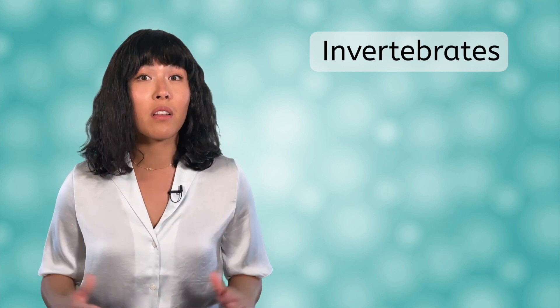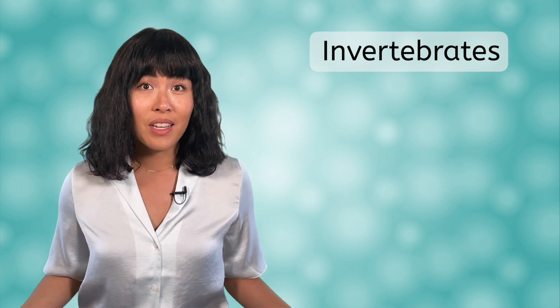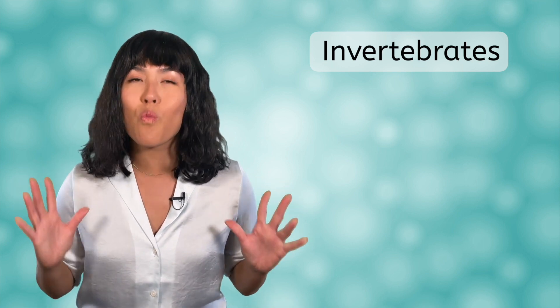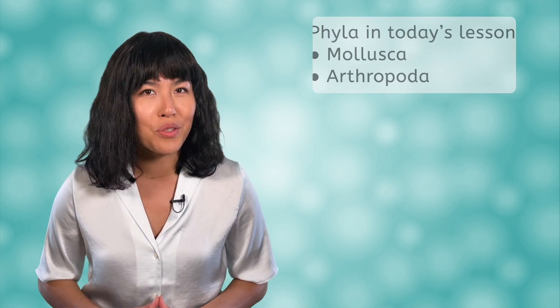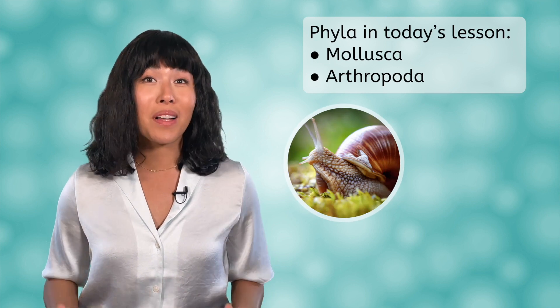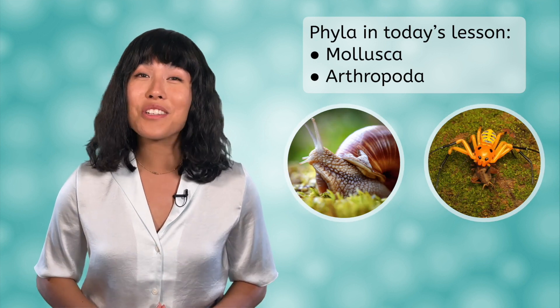If so, then you have eaten organisms found in our final two phyla of invertebrates: mollusks and arthropods. In fact, these animals make up a large food source for humans. You can find them on menus all around the world in countless preparations. Today's lesson will focus on these two phyla of invertebrates, Mollusca and Arthropoda.